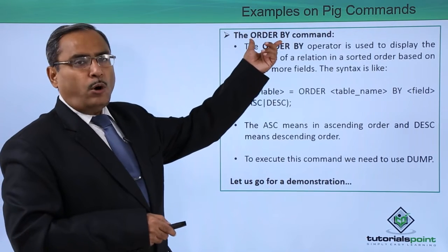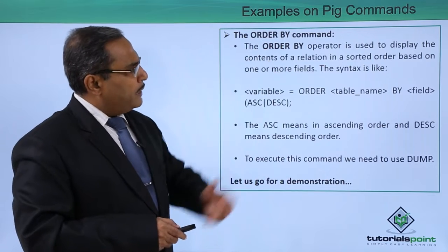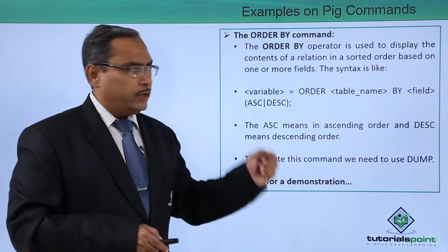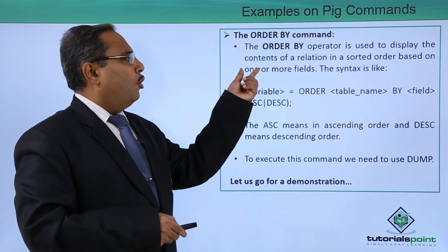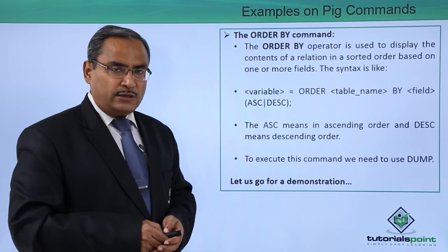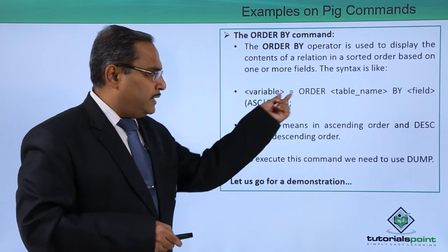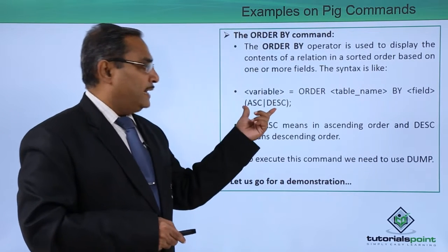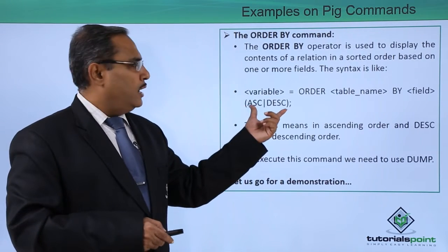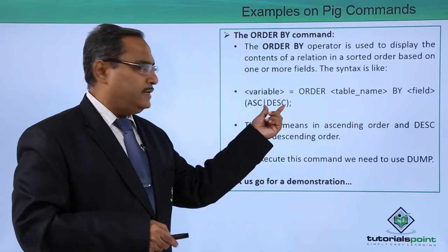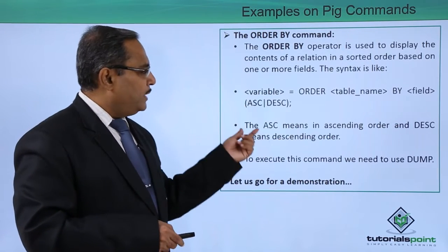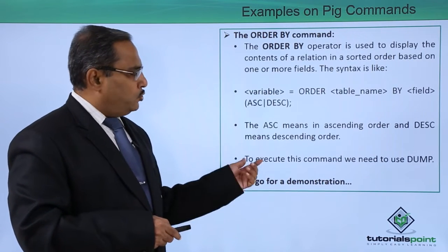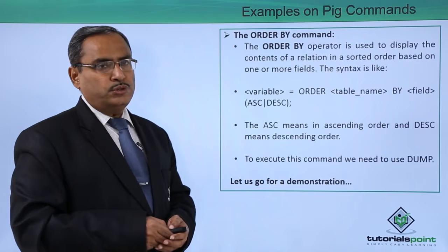Next one is the order by command. The order by operator is used to display the contents of a relation in a sorted order based on one or more fields. The syntax is: variable name is equal to order table name by field ascending or descending, using asc or desc followed by a semicolon. To execute this command we need to use dump.